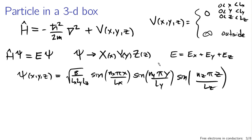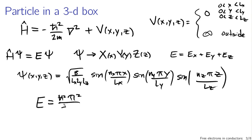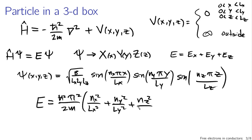The general solution from separation of variables has sine and cosine terms, but the boundary conditions not only give us quantum numbers nx, ny, and nz — they also eliminate the cosine terms, because the wave function must go to zero at points where the potential diverges to infinity. The quantization also sets the allowed energies: E is h-bar squared pi squared over 2m, times (nx squared / Lx squared + ny squared / Ly squared + nz squared / Lz squared).